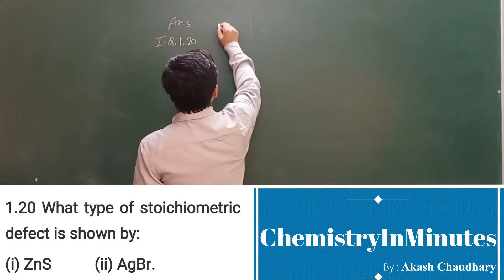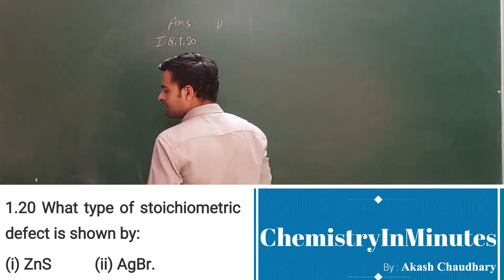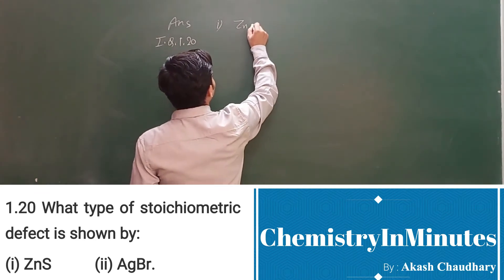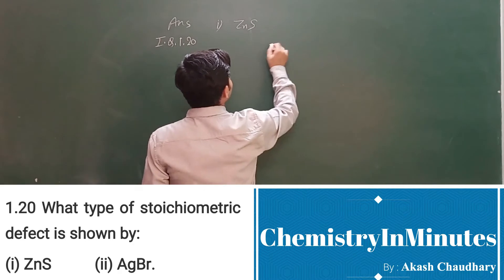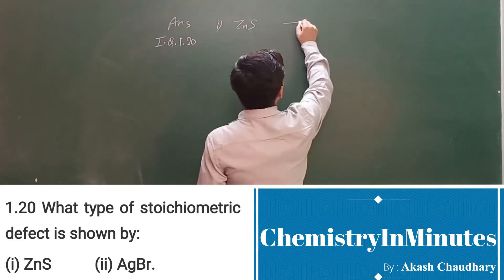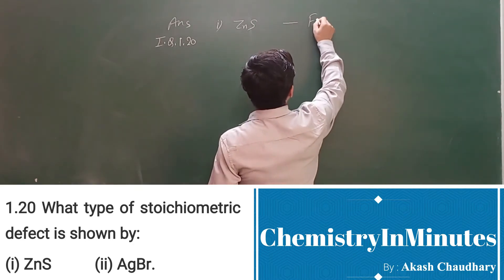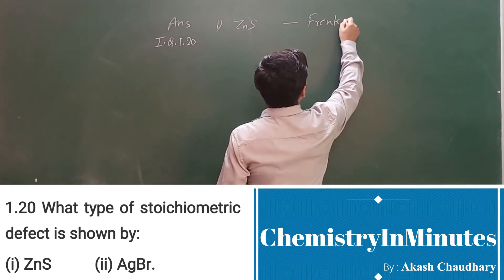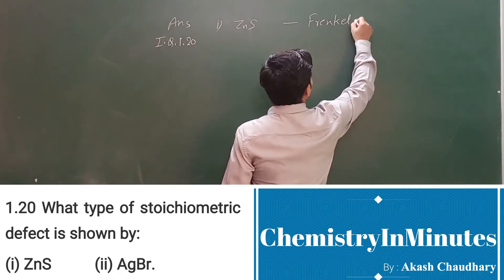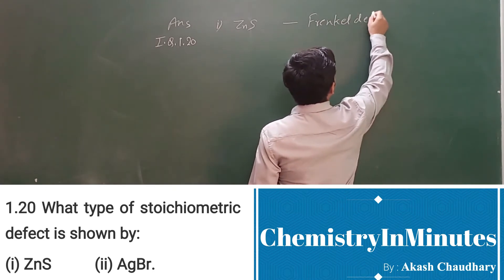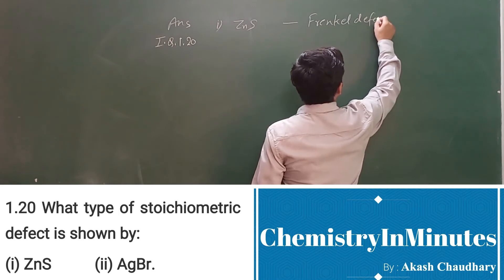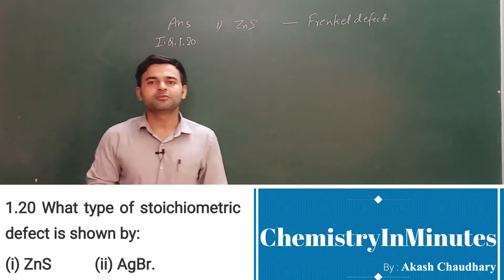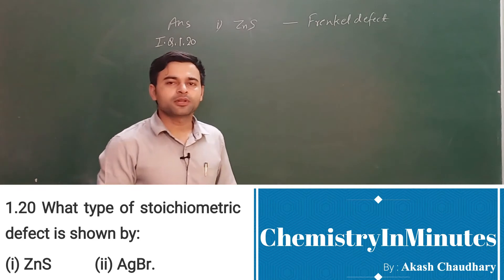The first solid is zinc sulfide. Zinc sulfide shows the Frenkel defect. The Frenkel defect is shown when there is a difference in the size of the cation and anion.